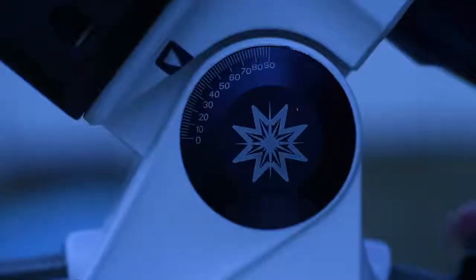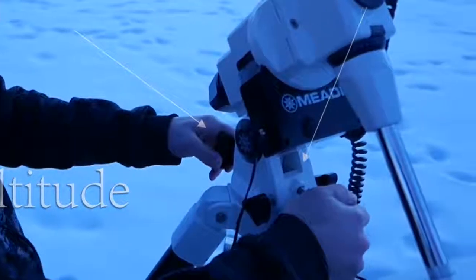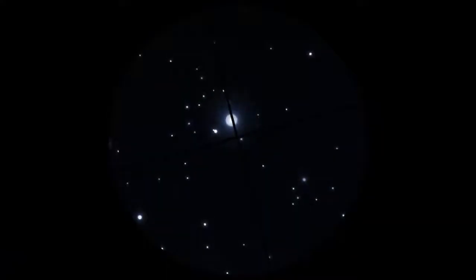Move the altitude and azimuth adjustment knobs as needed until Polaris is centered in the finder scope. If you run out of adjustment travel, you will need to reposition the tripod's position. This will achieve a rough polar alignment.